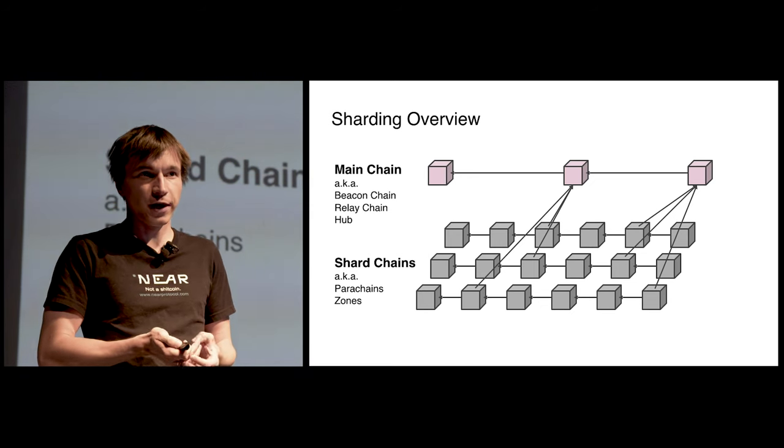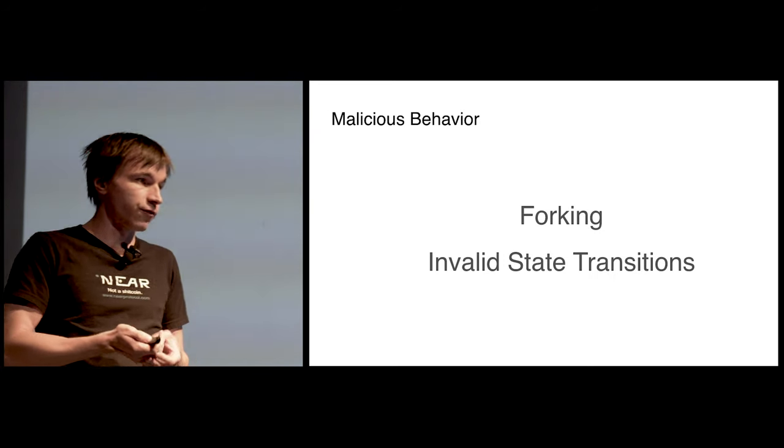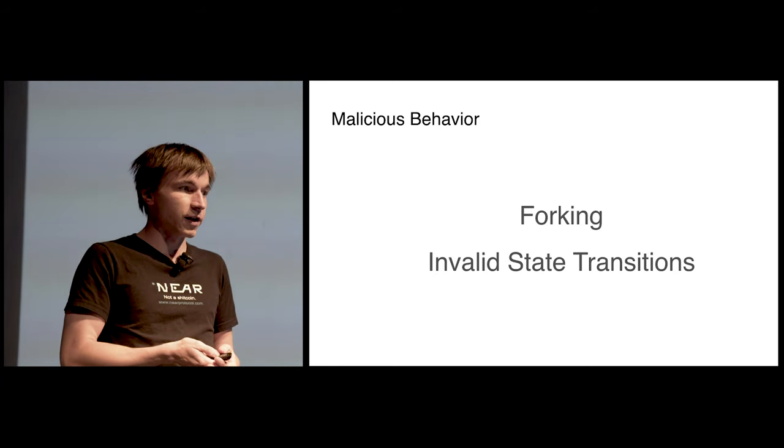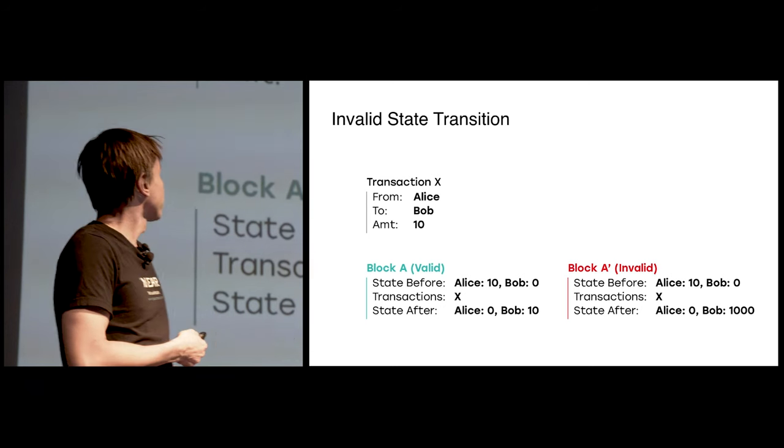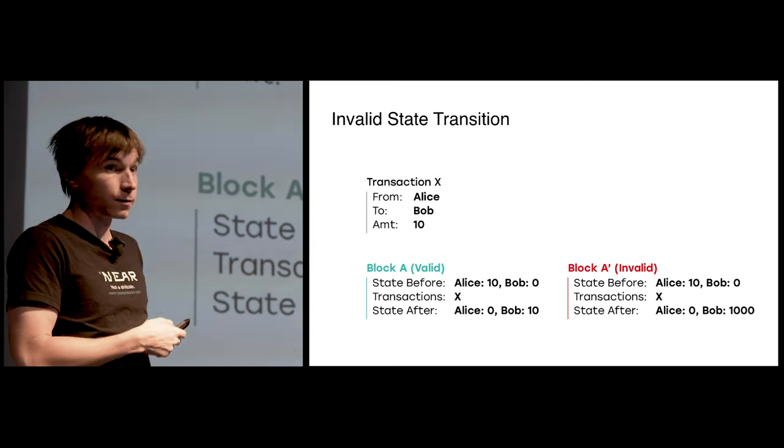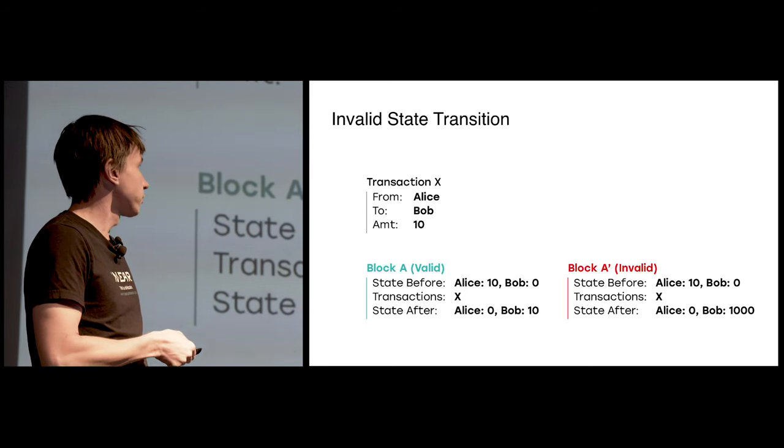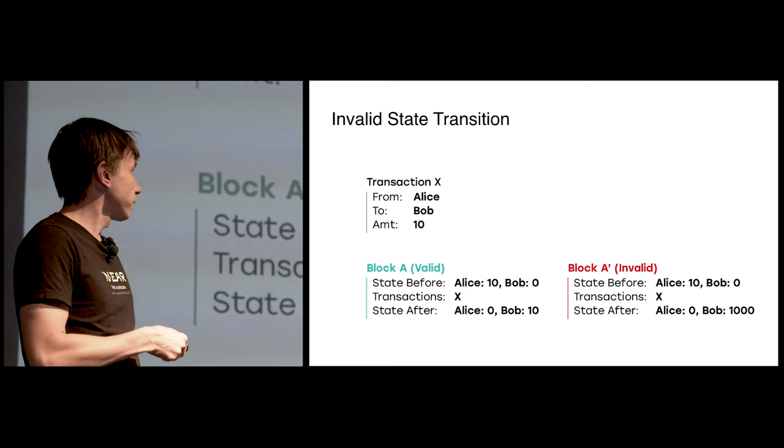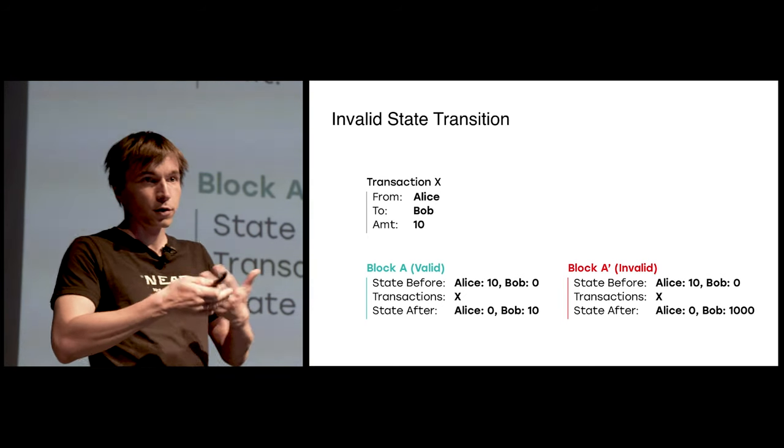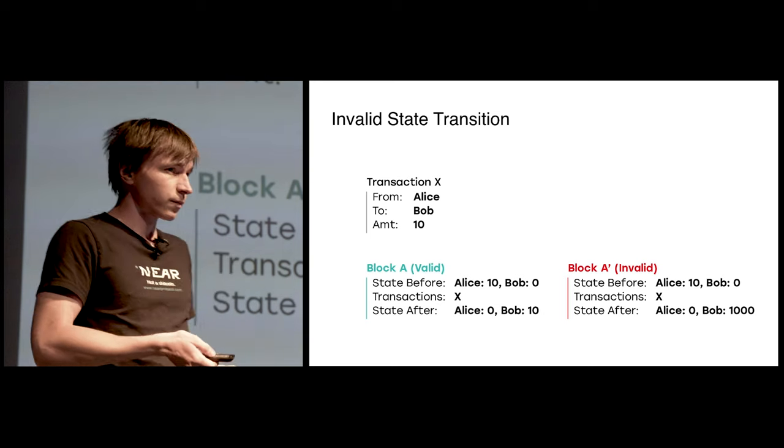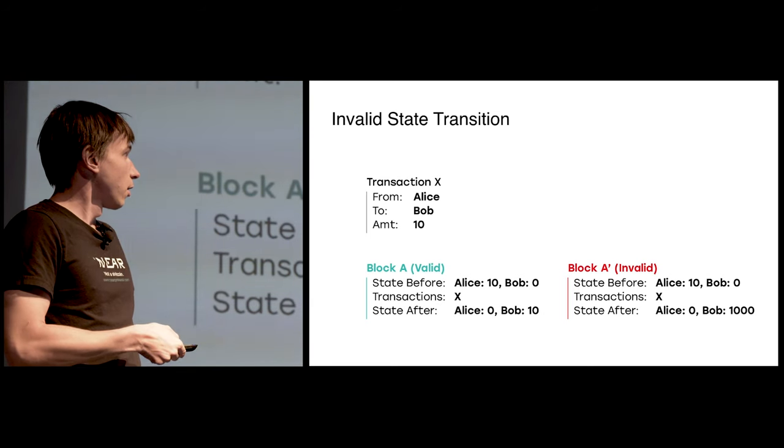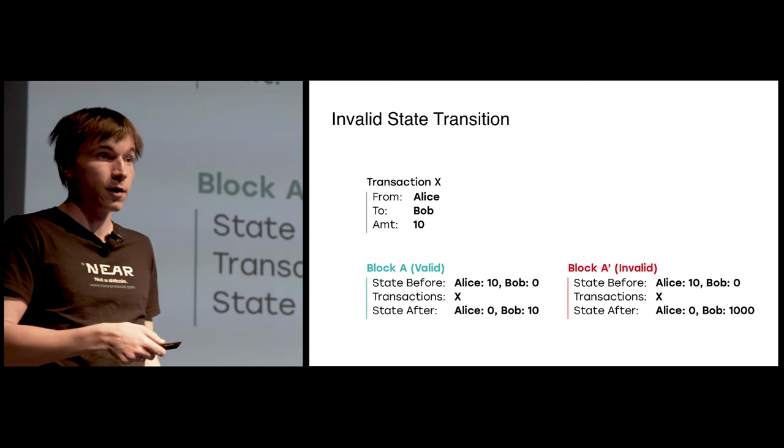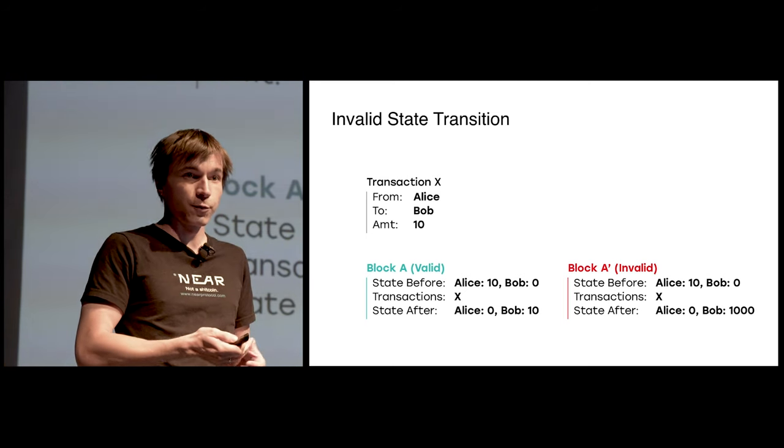But is forking the only malicious behavior that can be exercised? As a matter of fact, no. If you corrupt a shard in some way, you can fork. But you can also do another attack called invalid state transition. What invalid state transition is, is let's say we have a transaction in which Alice sends Bob 10 tokens. And we have the state in which Alice has 10 tokens and Bob has 0 tokens. If you get that state and apply this transaction, the state you're supposed to get is the state in which Alice has 0 tokens and Bob has 10. So any block which applies state in this way is valid. What can happen is there could be a block produced in which, in initial state Alice had 10 tokens, the transaction was applied and now Bob has 1,000. That is an invalid state transition.